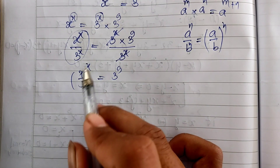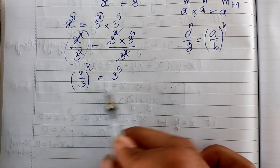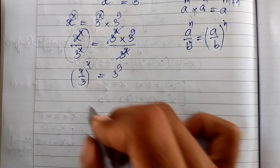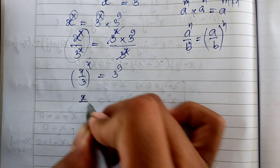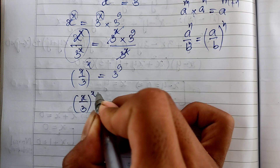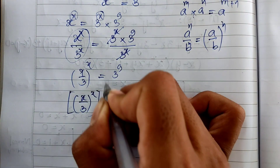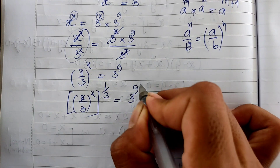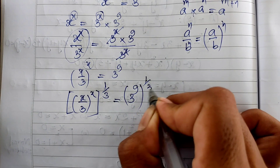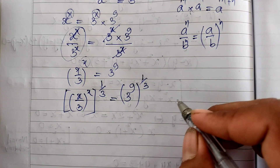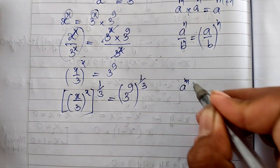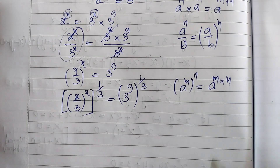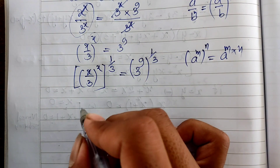Now I raise both sides of this equation to the power of 1 divided by 3. So I get (8/3) power H, all raised to power 1 divided by 3, equals 3 power 9, all raised to power 1 divided by 3. I use the rule that a power m, all power n, equals a power m multiplied by n.